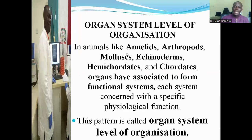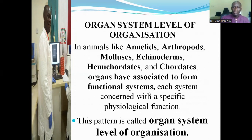They also have the organ system level of organization. In animals like annelids, arthropods, molluscs, echinoderms, and hemichordates, organs have associated to form functional systems, each system concerned with a specific physiological function. This pattern is called organ system level of organization, and it is common to annelids, arthropods, molluscs, echinoderms, hemichordates, and chordates.